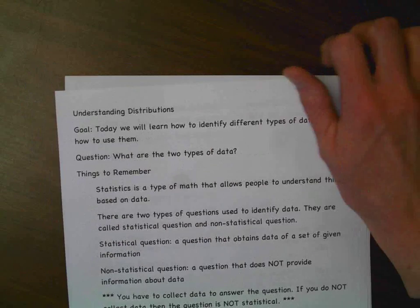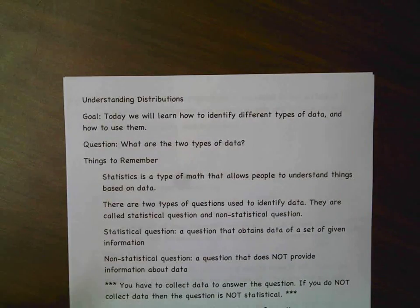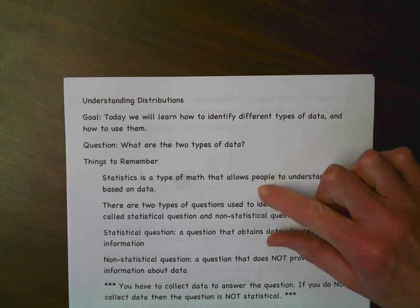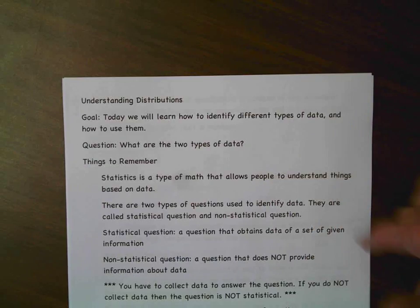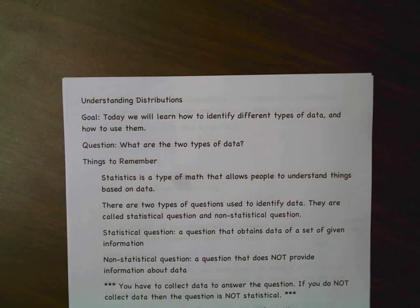That was a ton of information, I know, but once you get to start playing with all of this stuff, you're going to see how much fun it can be — we'll have lots of charts and data to look at. Our goal for today: we learned how to identify different types of data — statistical and non-statistical questions, numerical and categorical data, and how to graph them. What are the two types of data you learned today? I'll give you a hint: it was on the second page. That's all I have for you — I'm sorry the video was long, but it's a lot of information. Talk to you soon, have a good one, bye!